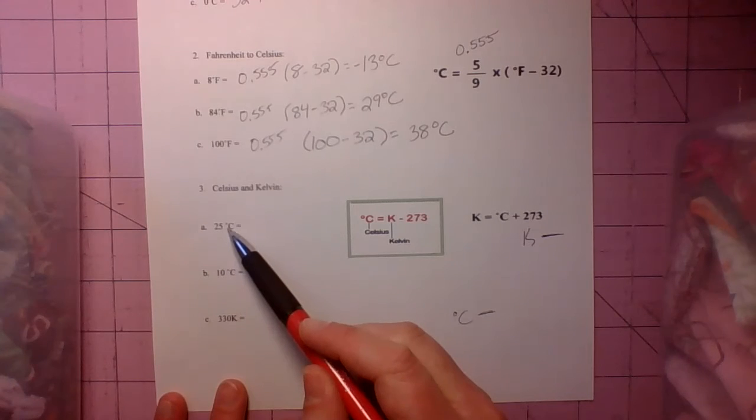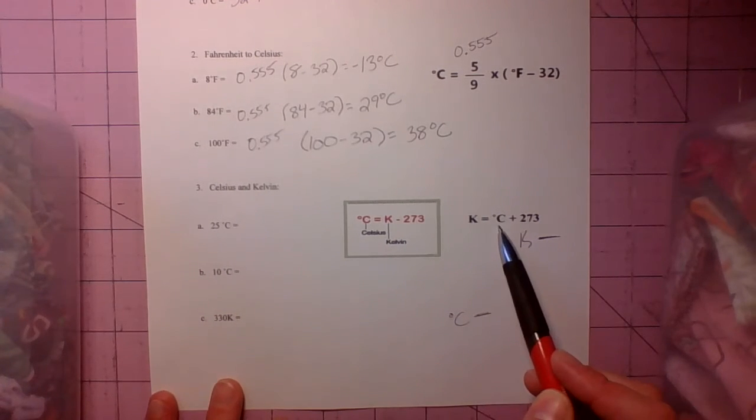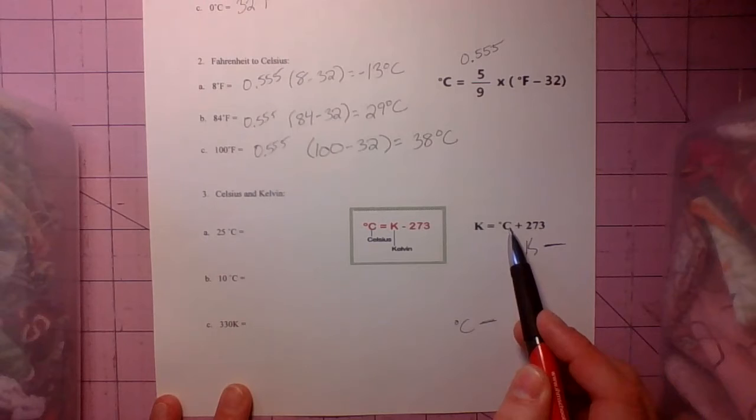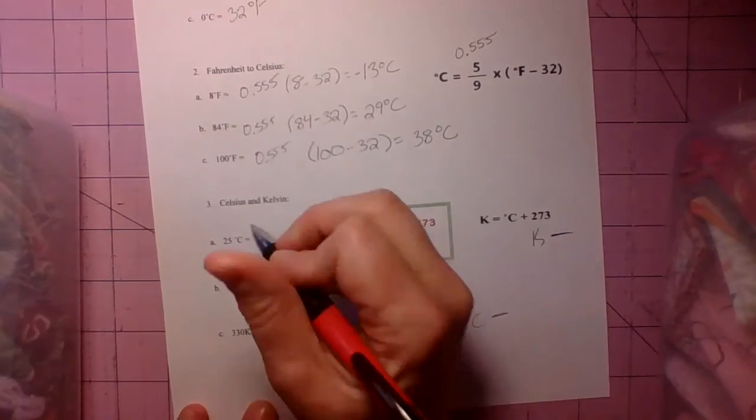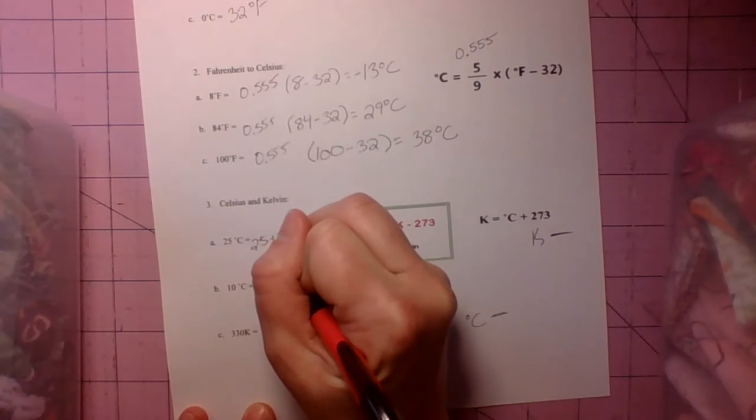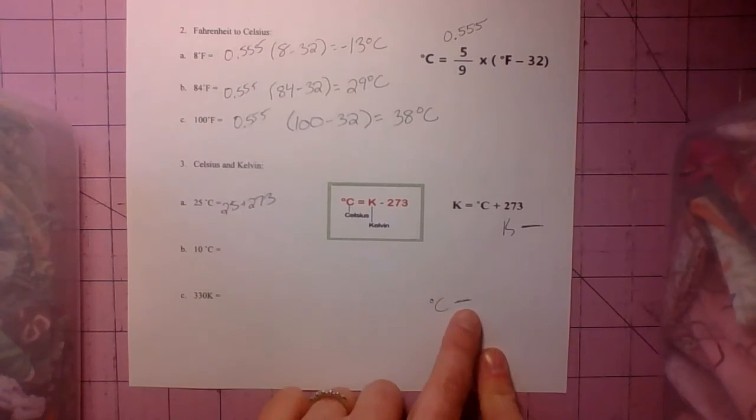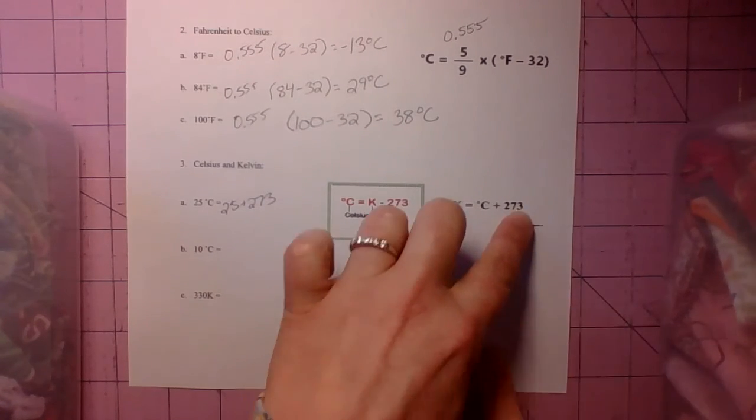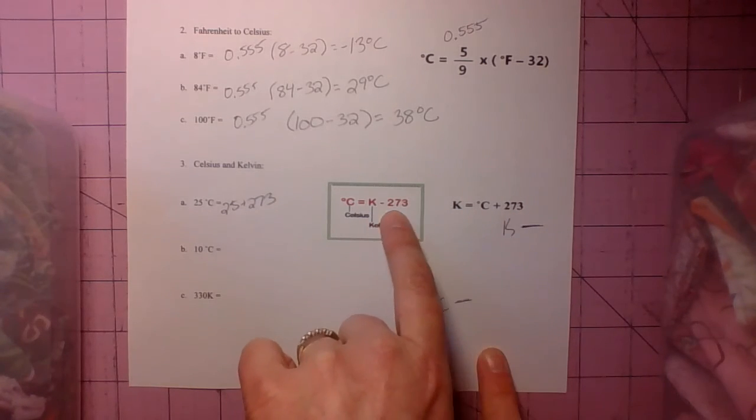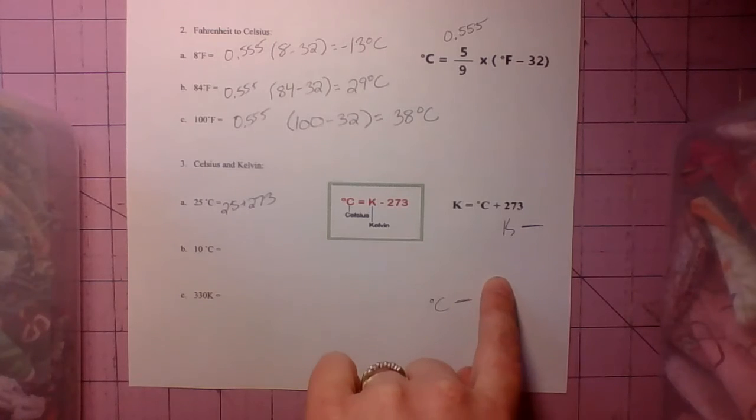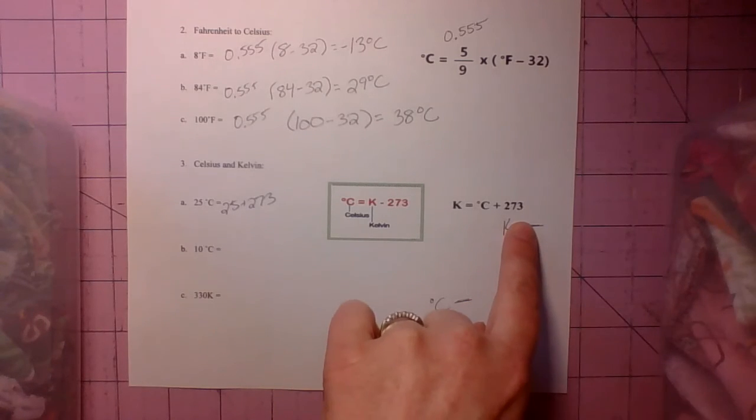So 25 degrees Celsius. We're trying to get it into Kelvin. So we're going to add. That Celsius number is 25. It's going to be 25 plus 273. Because you're starting down here and we're adding to make it a bigger number. So 273 is that constant number. If you start with Celsius, you add 273 to make it a bigger number.